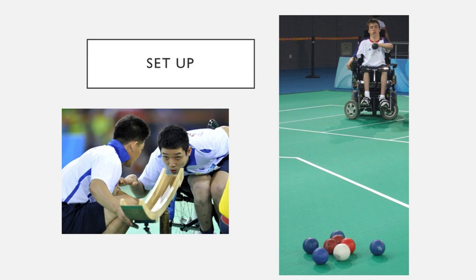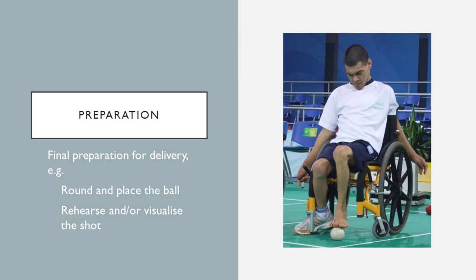The BC1 player — young David Smith — has completed his setup. Looking closely, he's gone right to the back of his box, his wheelchair is at an angle so he's lined up with the shot he wants to take, he's sitting up straight, and we can see his non-throwing arm holding on to the side of the chair. His setup is complete.